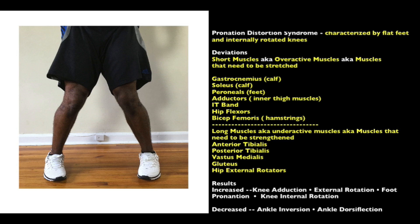The underactive muscles that need to be strengthened are the anterior tibialis (front of the lower leg), the posterior tibialis (back of the lower leg), the vastus medialis (inside of the upper thigh), the gluteus, and the hip external rotators. The external rotators should really stand out — if the knees are internally rotating, the external rotators are not working hard enough. This syndrome causes increased knee adduction, foot pronation, external foot rotation, knee internal rotation, ankle dorsiflexion, and ankle inversion — the ankles come up and in.